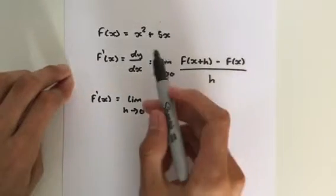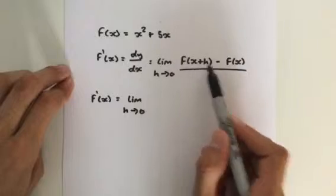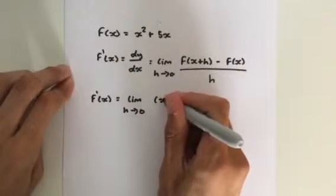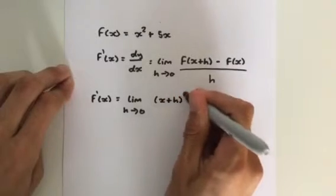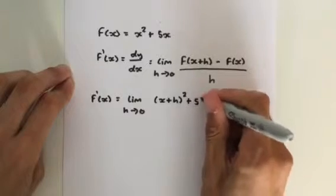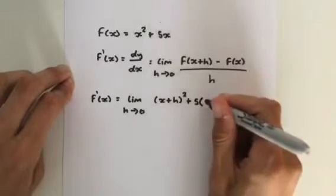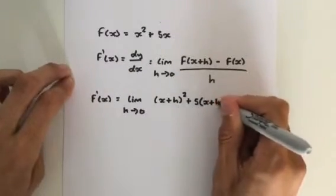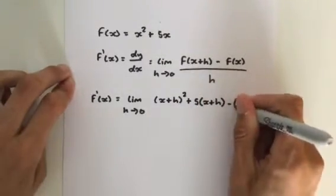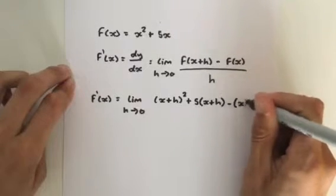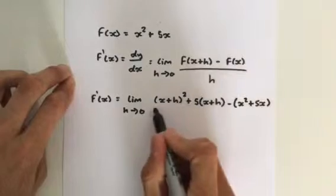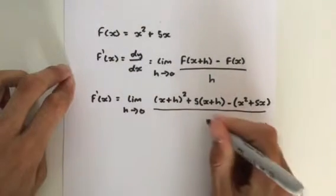So let's do that. Wherever there's an x, we should replace x plus h. So in the last video, we got x plus h all squared for x squared. Then we add 5 times x, which is x plus h. Then we minus our original function x squared plus 5x, which is all divided by h, like so.